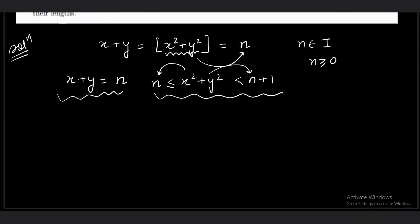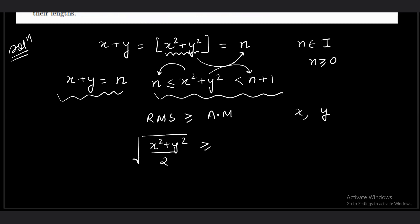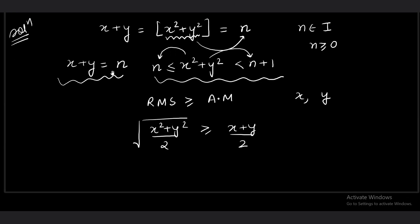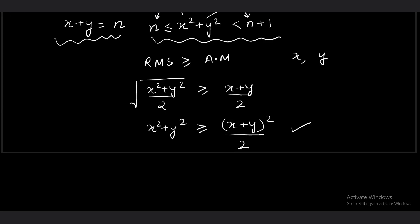For that I will use an important concept: the RMS value is always greater than or equal to the arithmetic mean. Constructing two numbers x and y, the root mean square value is greater than or equal to the arithmetic mean, which is (x+y)/2. Since x+y is a positive quantity, squaring both sides gives x squared plus y squared is greater than or equal to (x+y)² divided by 2. Since x plus y equals n in this question, we get x squared plus y squared is greater than or equal to n²/2.